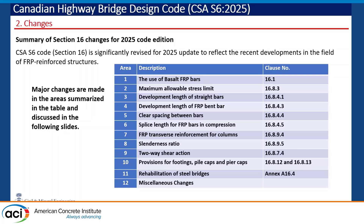So when you need the column under large deformations, FRP is there but steel may not be if it has already yielded. That is where we find that we can depend on this material for large ductility, and that is why we have also managed to give some guidelines for highly ductile structures.